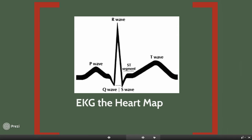An EKG is like a map of the heart. Each EKG cycle consists of five waves labeled P, Q, R, S, and T. The P wave represents normal atrial depolarization. The QRS complex, representing one single heartbeat, corresponds to the depolarization of the right and left ventricles. The T wave represents the repolarization or recovery of the ventricles.